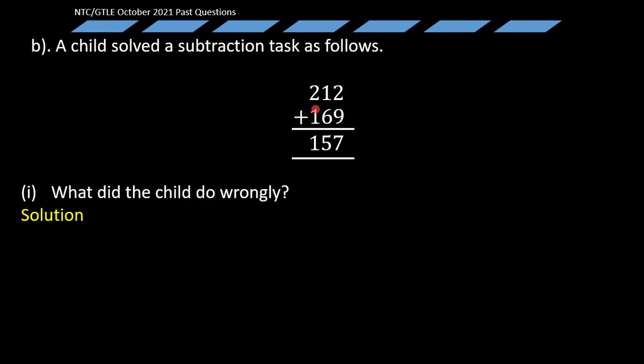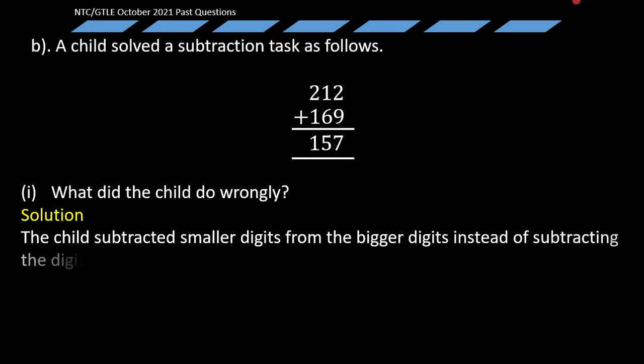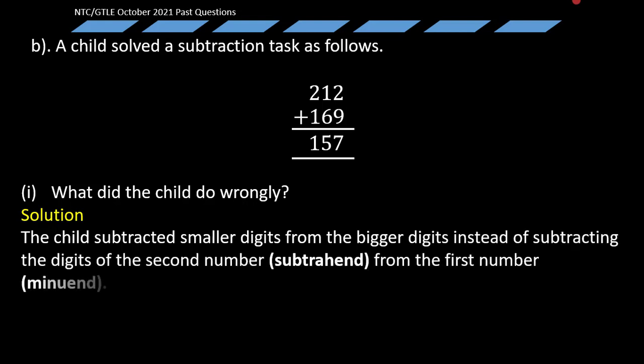So in writing, what did the child do wrong? You realize that the child subtracted smaller digits from the bigger digit instead of subtracting the digits of the second number, that was a subtrahend, from the first number which is the minuend. So the child was not following the order of subtraction.